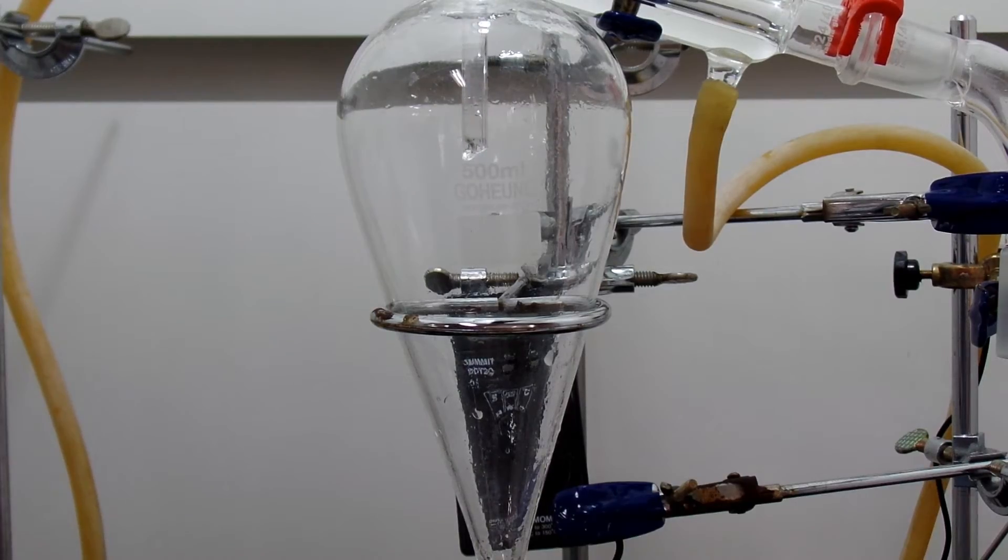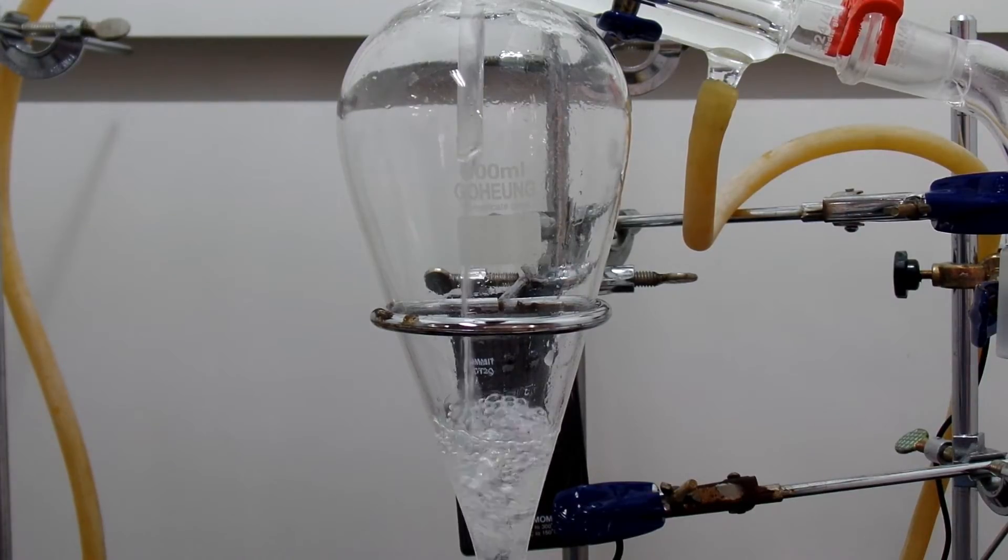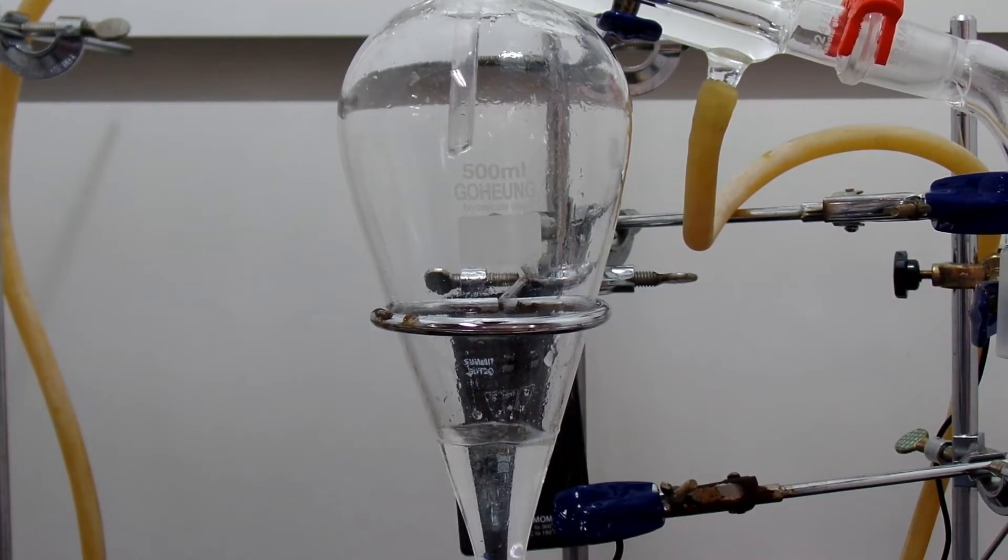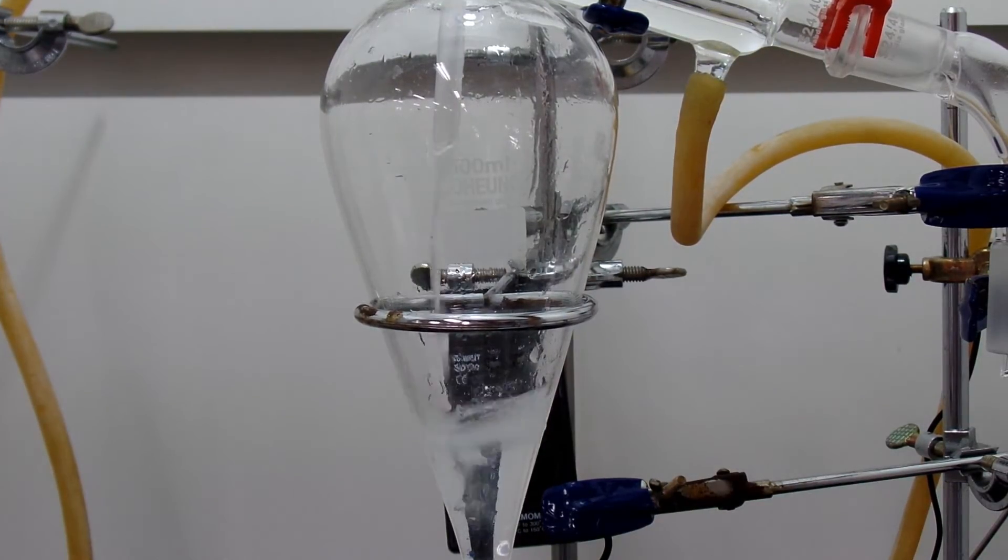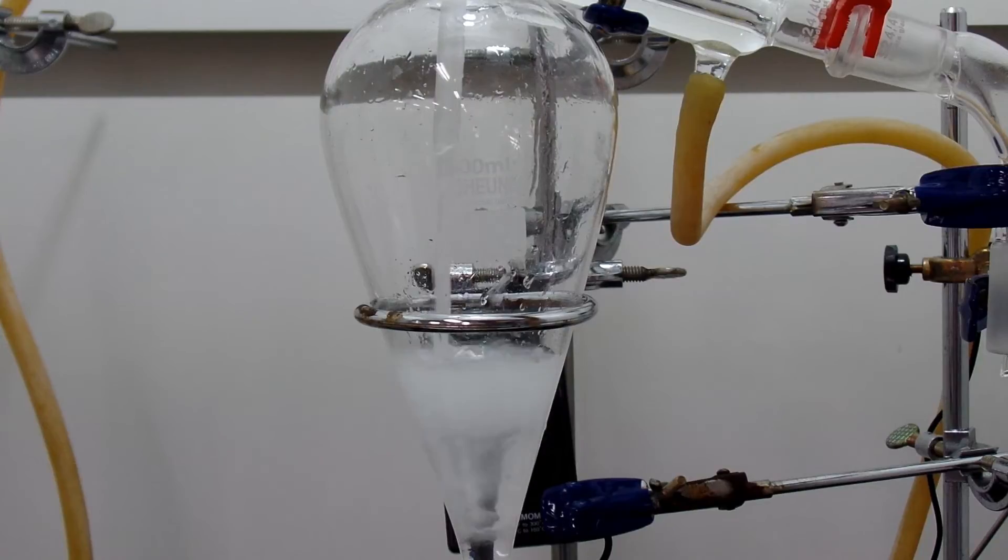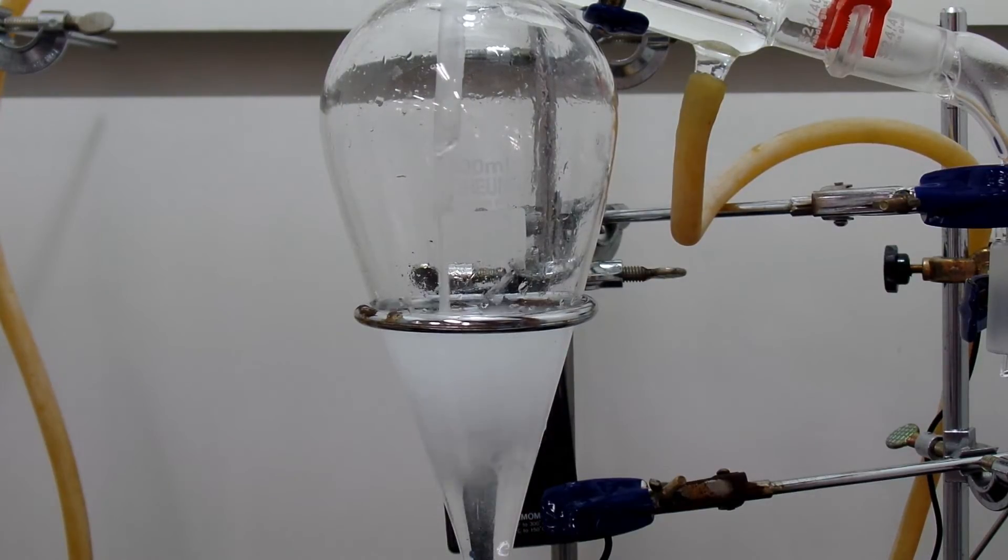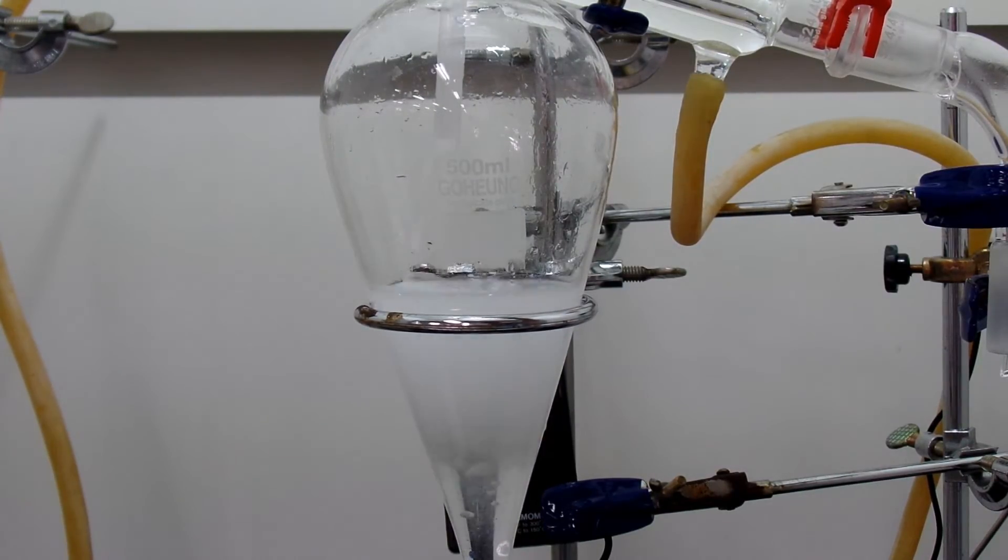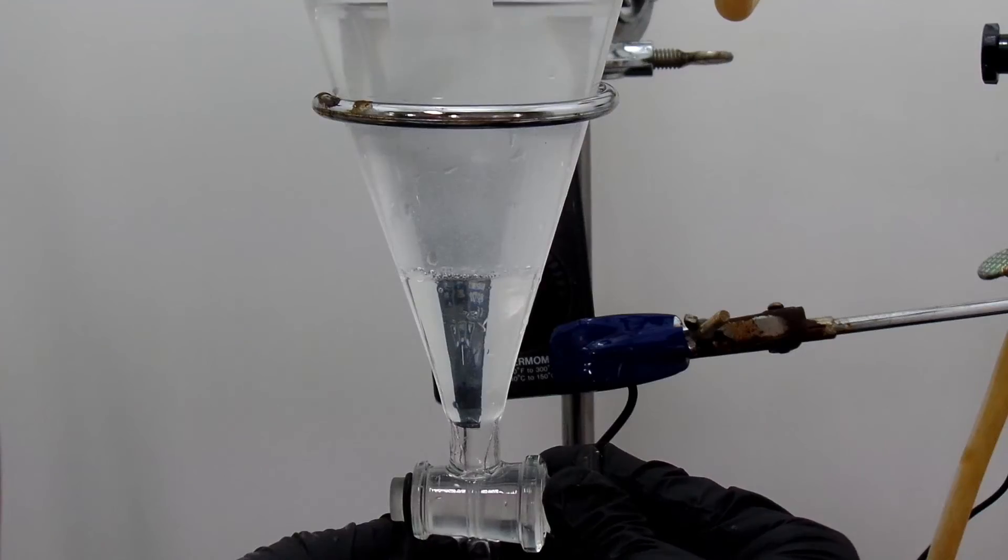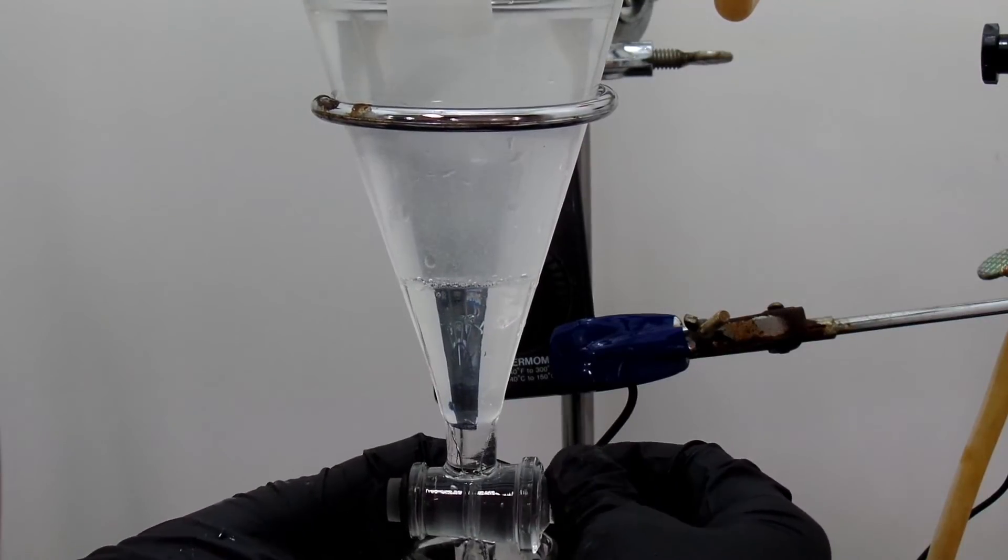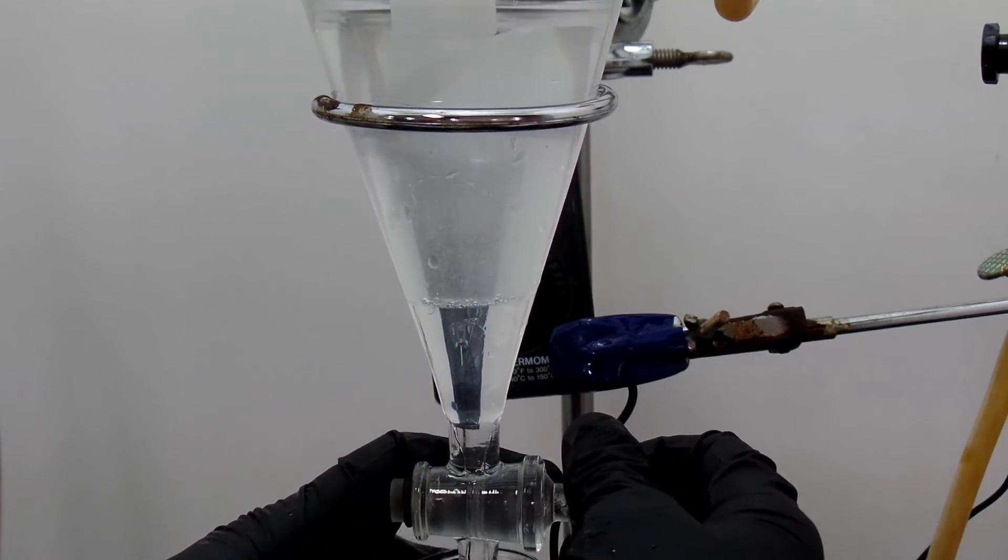Again, add the lower layer to the separatory funnel and add saturated sodium bicarbonate solution. This is also shaken and vented frequently. Obtain the lower layer. I didn't do it here, but I recommend another washing step.